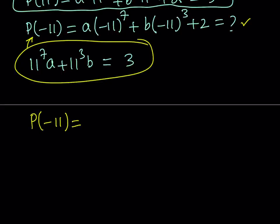So P of negative 11. Now, notice that 7 is an odd number. So when you raise a negative number to an odd power, the answer is going to be negative. So we can basically write this as negative 11 to the 7th power multiplied by A. And the same thing goes for negative 11 to the 3rd power. So we can write it as minus 11 to the 3rd power multiplied by B. And then plus 2 is what I'm trying to find.